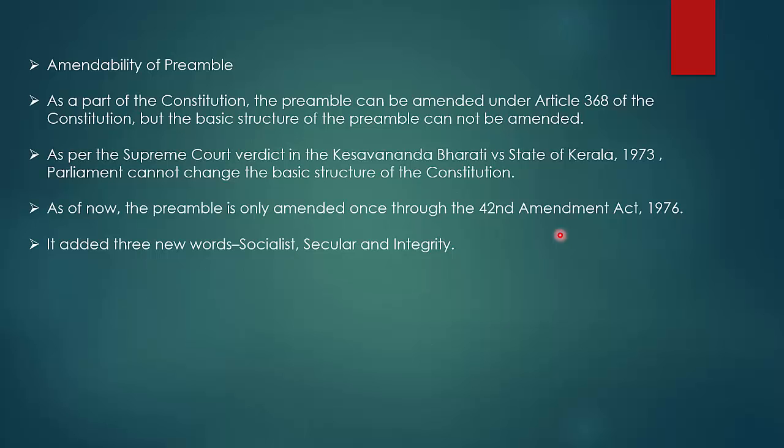The 42nd Amendment to the constitution is called the 'mini constitution' because there were many changes in it. What changed in the preamble? It added three new words: socialist, secular, and integrity.